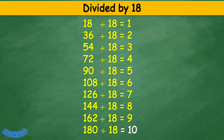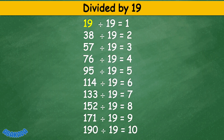Divided by 19. 19 divided by 19 equals 1. 38 divided by 19 equals 2. 57 divided by 19 equals 3. 76 divided by 19 equals 4. 95 divided by 19 equals 5. 114 divided by 19 equals 6. 133 divided by 19 equals 7. 152 divided by 19 equals 8. 171 divided by 19 equals 9. 190 divided by 19 equals 10.